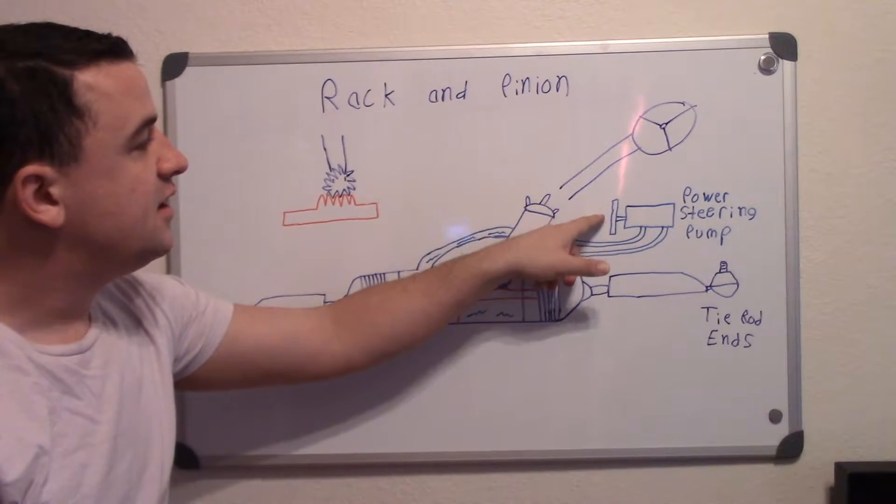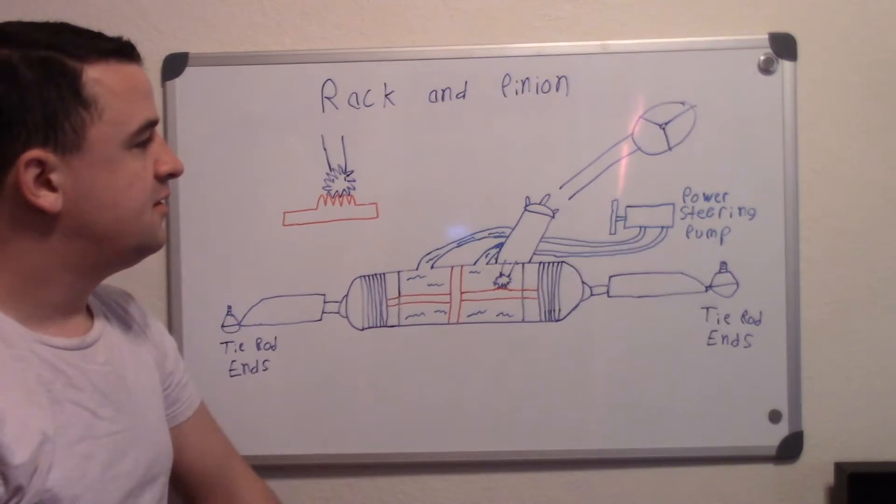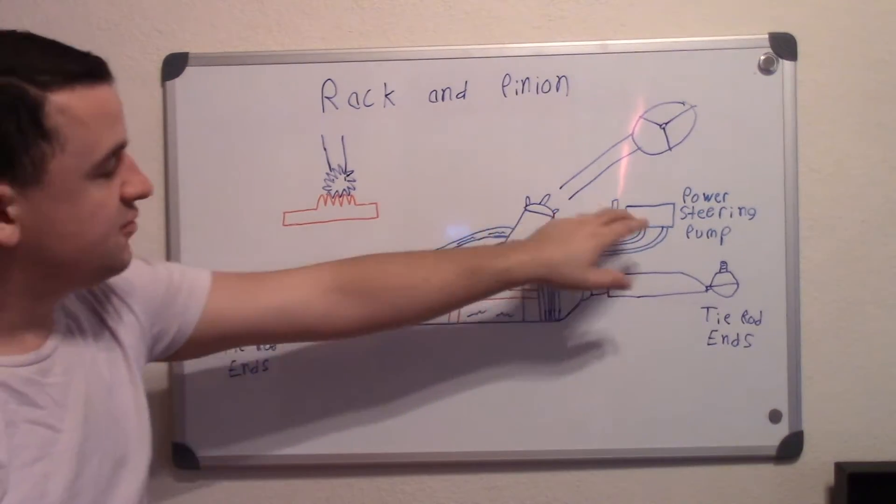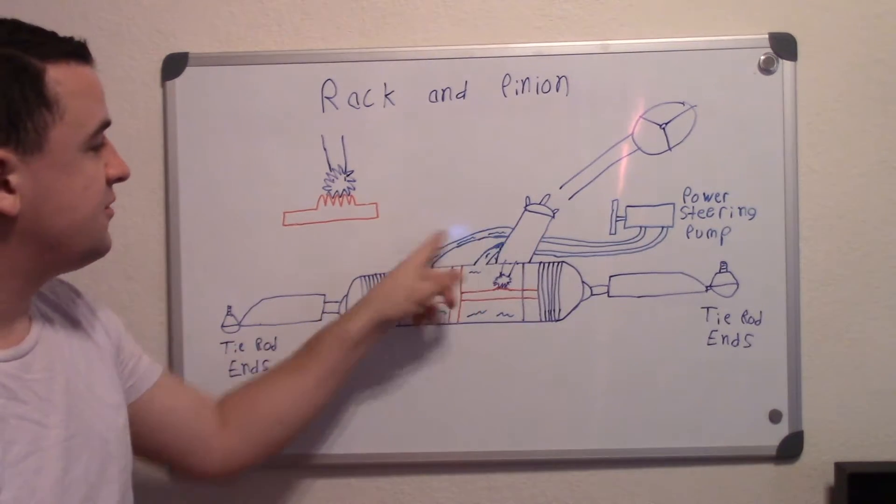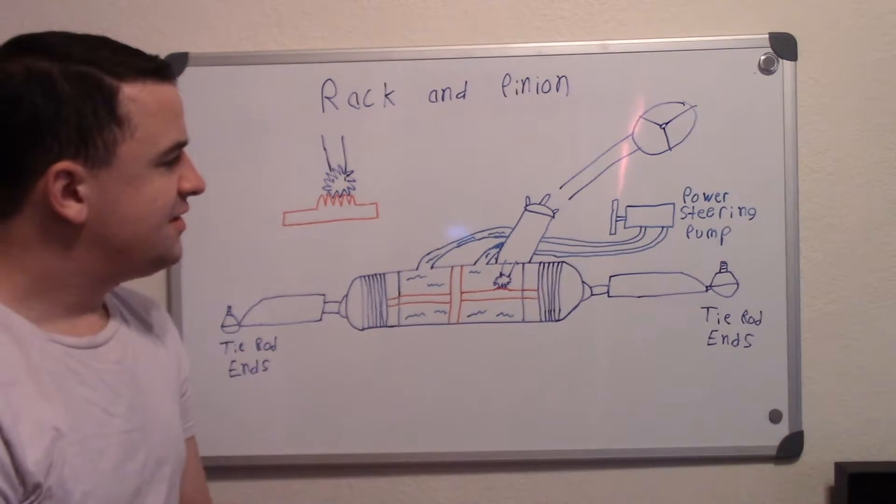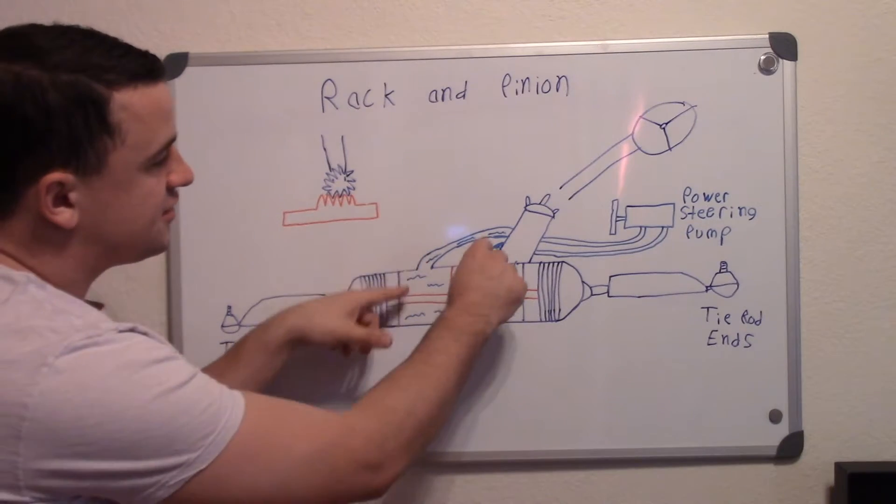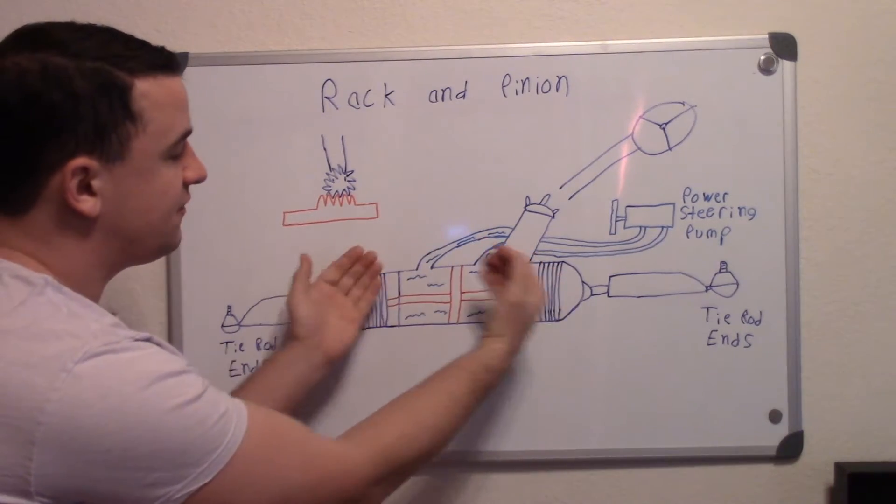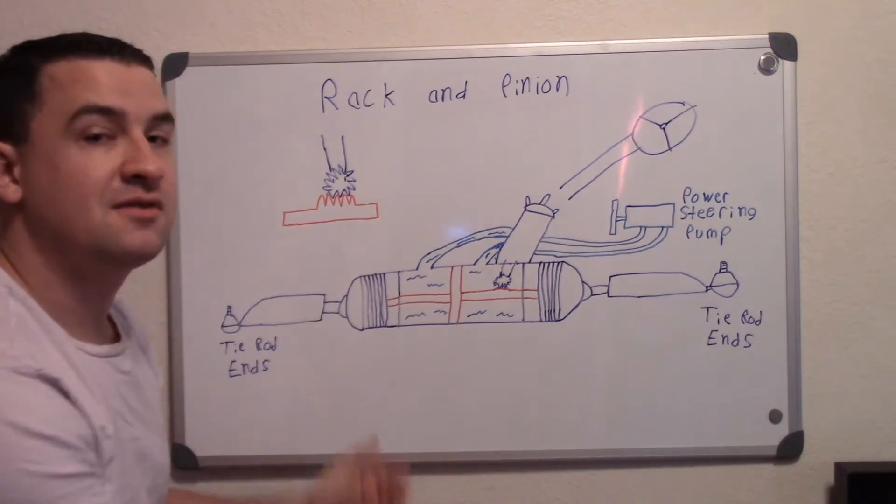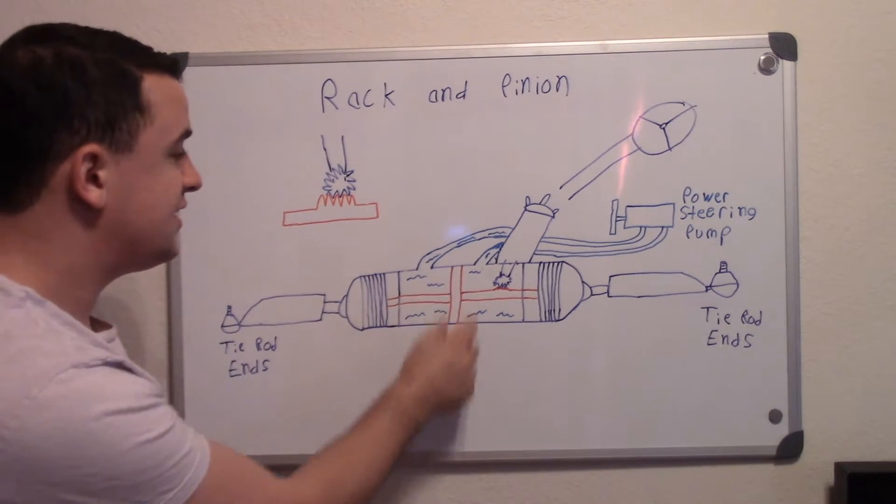This right here is the pulley that's turned by your belt. And you have usually two hoses that go to it and then two hoses that will come in to the side. Basically how it works, you have pressure coming in to both sides, and they're fighting against each other. And so they cancel out and they're pretty equal and it's just stationary there.